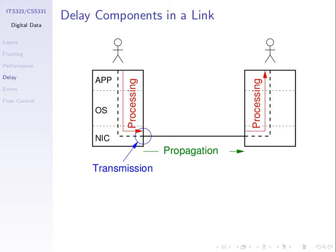The total delay from pressing send to the destination seeing the message is the summation of four components: processing at the transmitter, plus transmission delay, plus propagation delay, plus processing at the receiver. So really three different types: transmission, propagation, and processing delay. Devices have processing delay; links have transmission and propagation delay. Understanding these helps us explain why, for example, a ping shows 10 milliseconds and not 1 millisecond or 1 second.